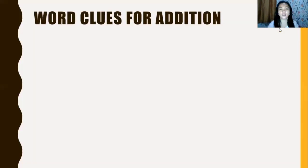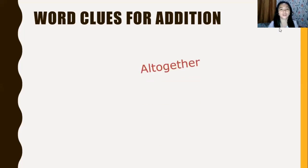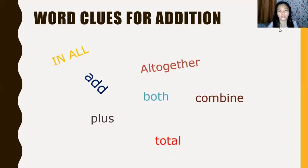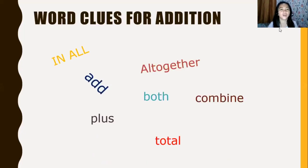Let's start. But before we answer a word problem, what are the word clues for addition? We have: all together — when we see 'all together' in a word problem, that means addition. Also: add, in all, combine, plus, total, both, and some. These are the word clues for addition.